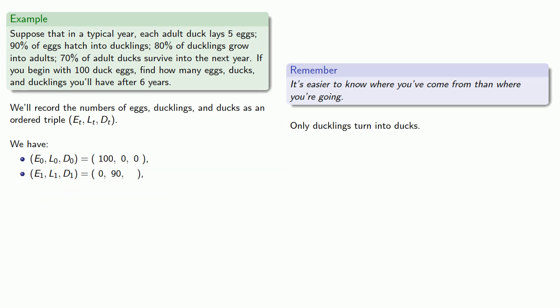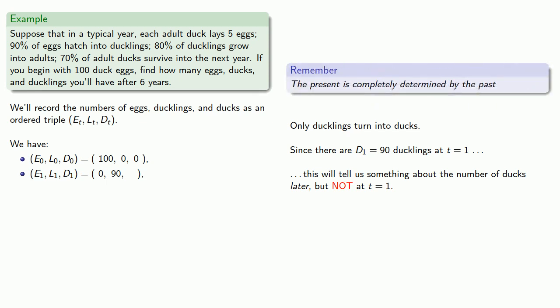Now only ducklings turn into ducks. And since we've just determined there are L_1 equals 90 ducklings at t equals one, this will tell us something about the number of ducks later, but not at t equals one. And here's an important thing to keep in mind when working with any discrete time model: the present is completely determined by the past. We want to know what happens at t equals one. We don't care what's going on at t equals one. What we care about is what happened at t equals zero.